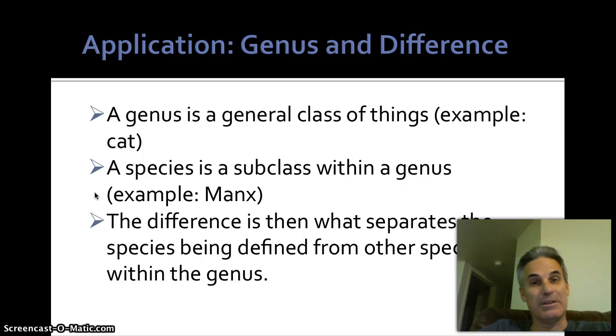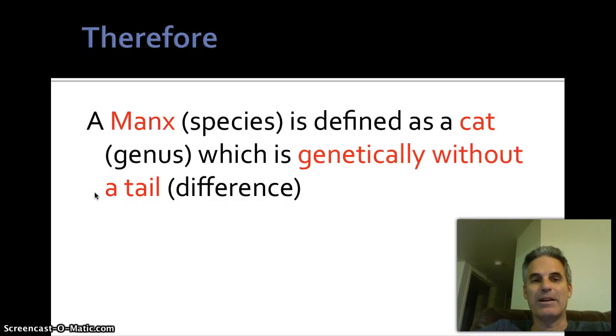Okay. So, do you have an answer? Okay. A Manx, the species, is defined as a cat, a genus, which is genetically without a tail, which is the difference. So Manxes are actually cats that are born without a tail. And I say genetically without a tail because you cannot make a cat into a Manx. That would be wrong. It would be cruel. So don't do that.